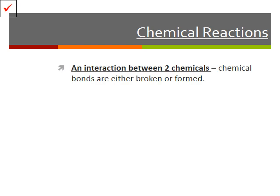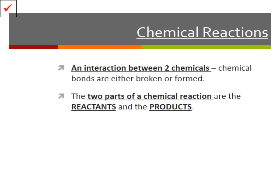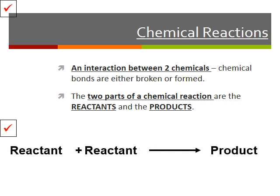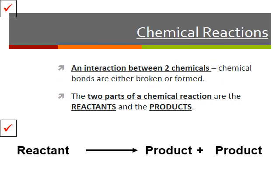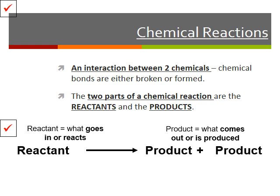Chemical reactions are simply put just an interaction between two chemicals where either bonds are created or broken. There are two parts of a chemical reaction: the reactants and the products. The reactants are what go into a chemical reaction, or what react. We can have two reactants going through a reaction to create one product, or one reactant broken apart into two products. The reactant is what goes in or reacts, whereas the product is what comes out or is produced.